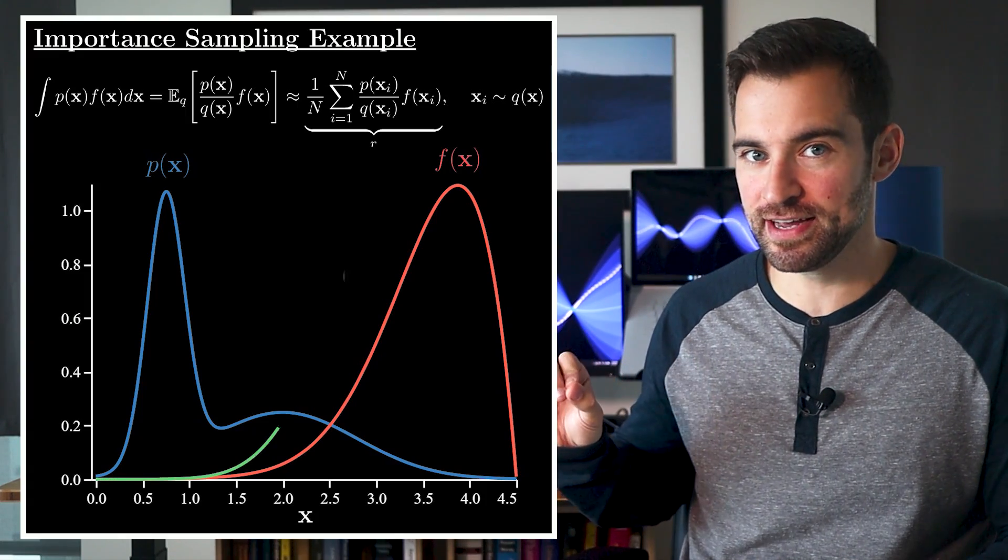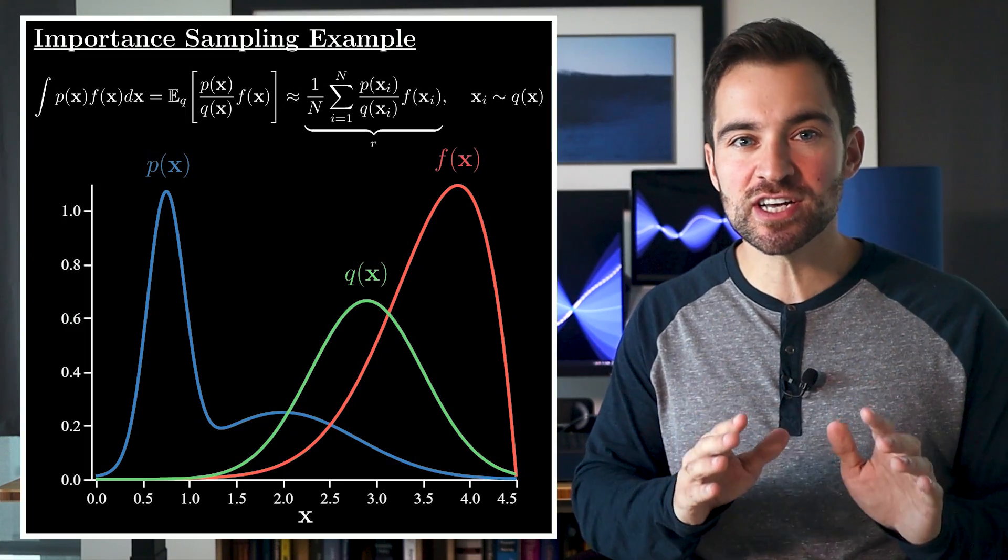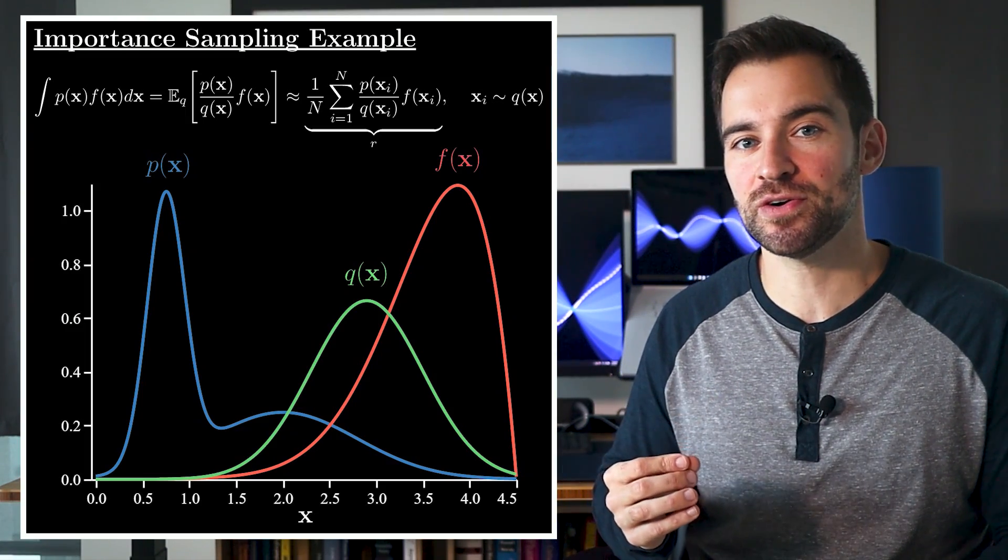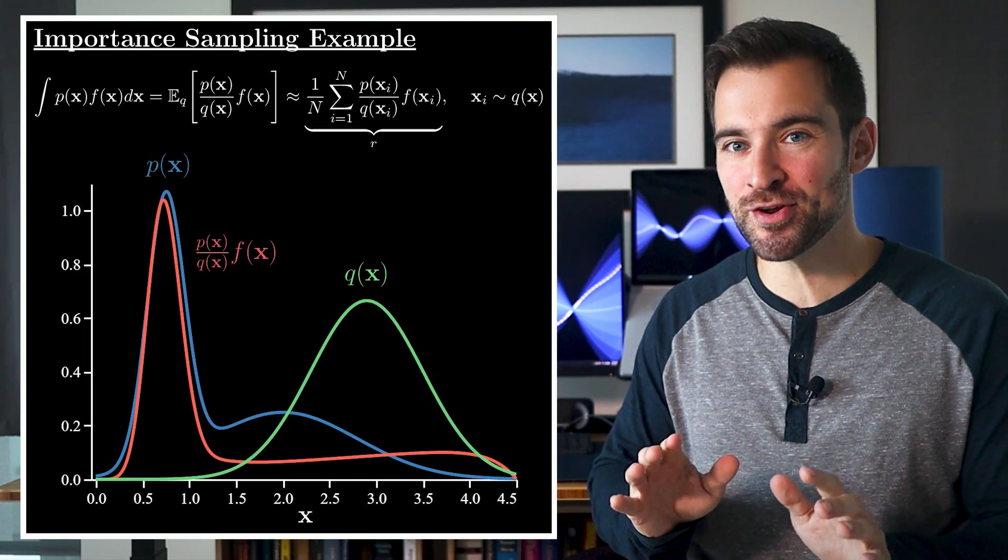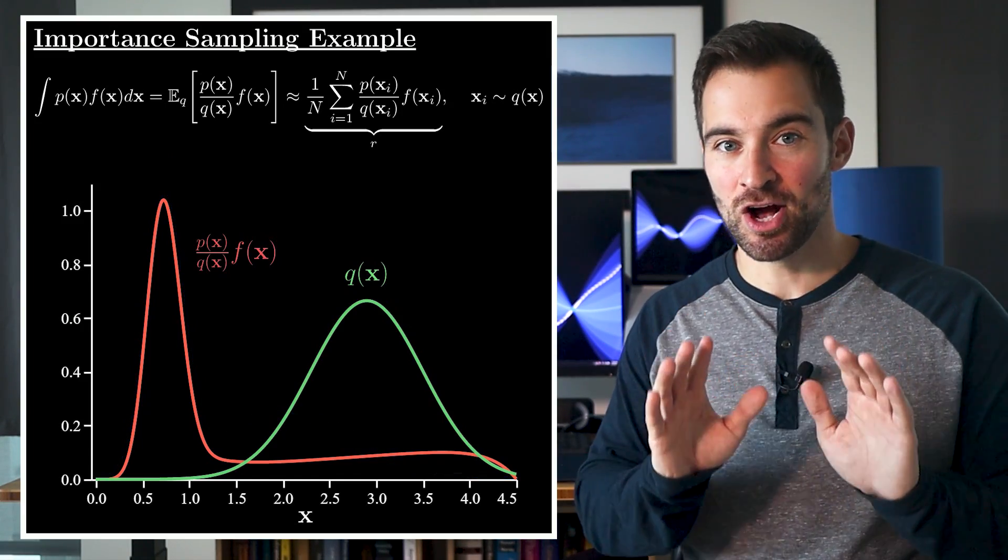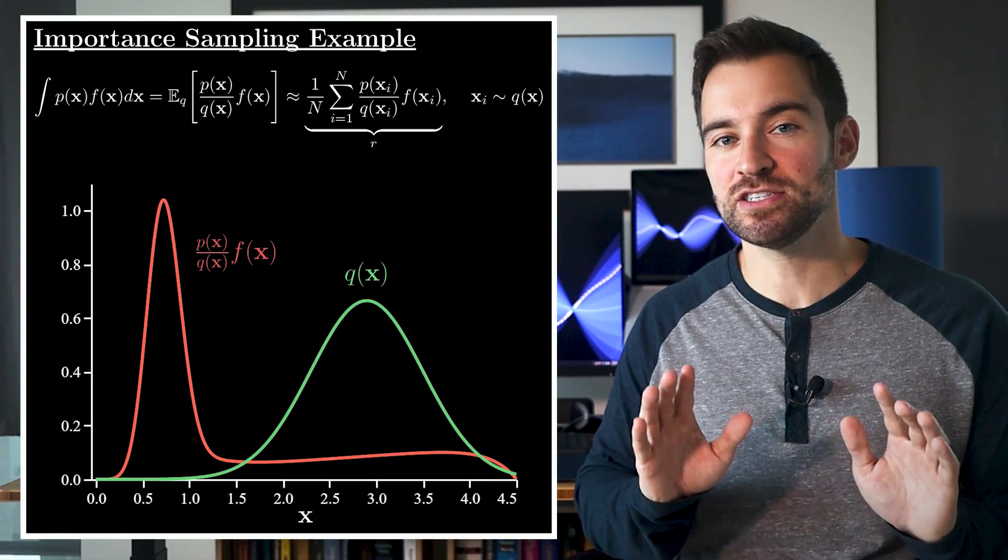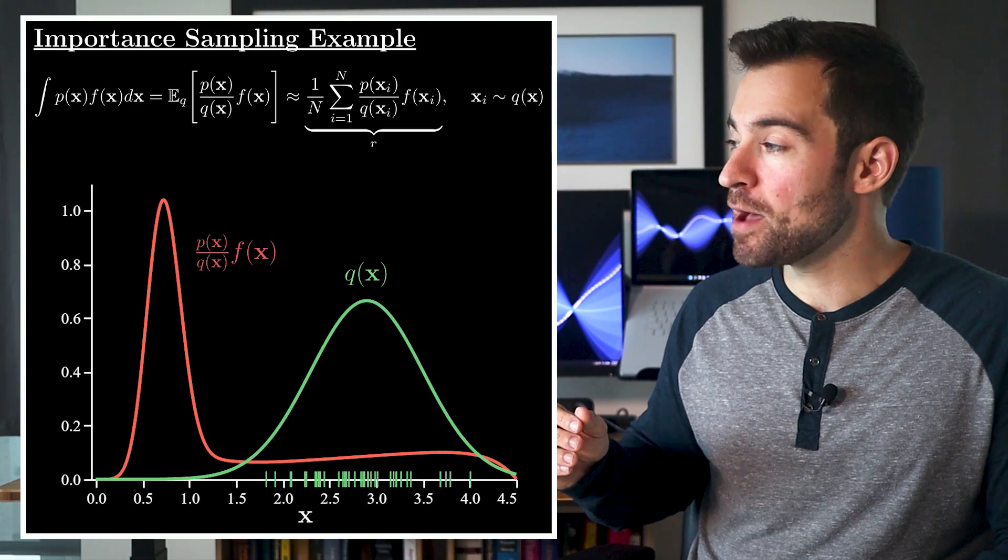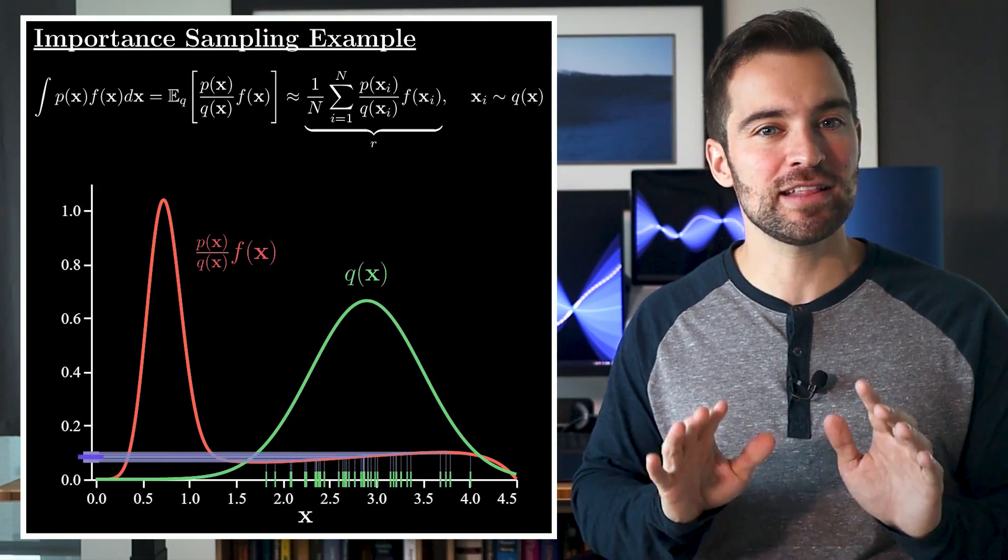Now, importance sampling can help us here because we can make it sample the more important regions more frequently. In particular, I'll make q(x) this. But now, if we'd like to use q samples, we need to adjust the f function. So, let's do that by multiplying it by the density ratio, which gives us this. To declutter things a bit, I'll drop p(x). Okay. Now, after this adjustment, we can proceed just like we did with plain Monte Carlo. That is, we sample from q, pass those into the density ratio adjusted f, and then calculate their average.